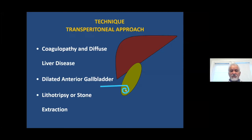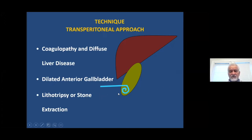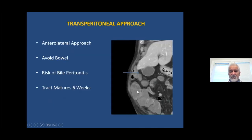Do you want to take the risk of bleeding in patients who are at risk of bleeding and who have liver disease, so that traversing the liver may be difficult, either focal or diffuse. It is easier to do in those patients where the gallbladder is markedly distended or dilated and is sitting right next to the parietal peritoneum. This approach may also be used for extraction of the stone or lithotripsy, because you may need to dilate the tract even larger than the catheter itself, and you don't want to do that through the liver parenchyma.